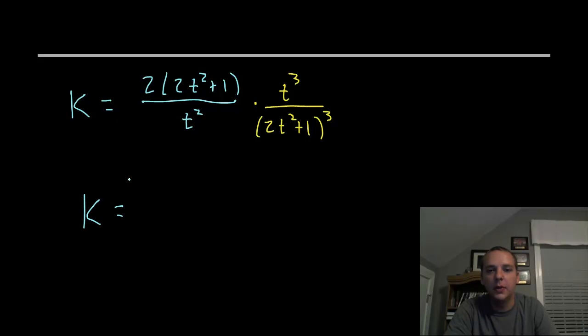Final answer: let's see what happens. This cancels and that cancels, leaves you with a square. t squared and t cubed leaves you just with a t. So the curvature would be 2t divided by 2t squared plus 1 quantity squared.